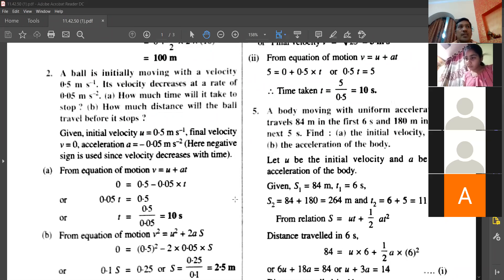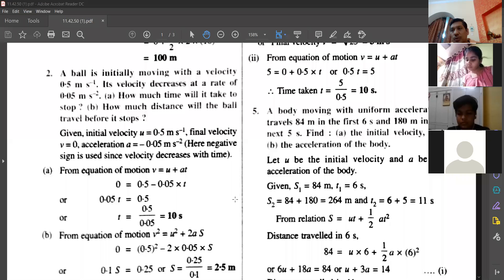v equals to u plus at. Put v as 0, put u as 0.5, and put acceleration as minus 0.05. Please do it. So 0 equals to 0.5 minus 0.05 into t.